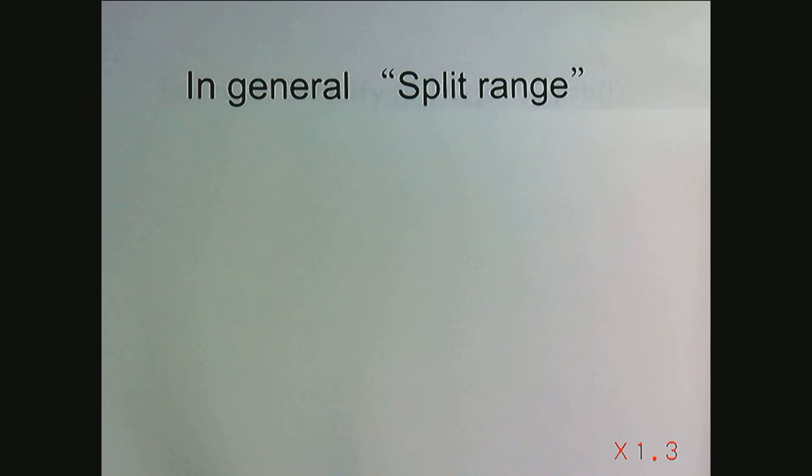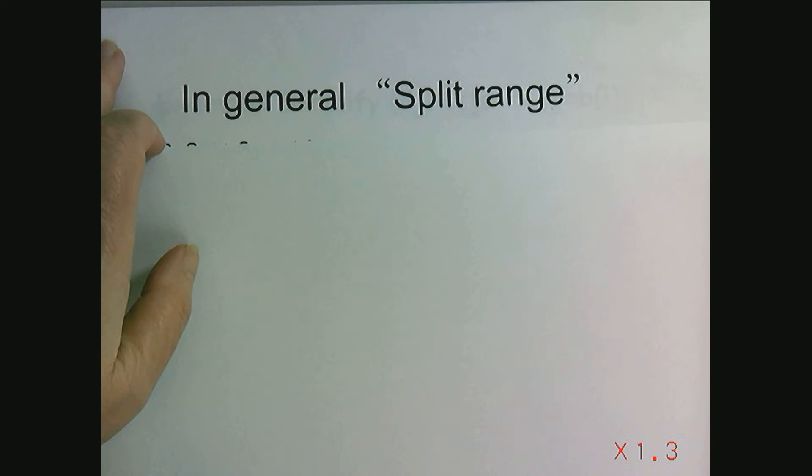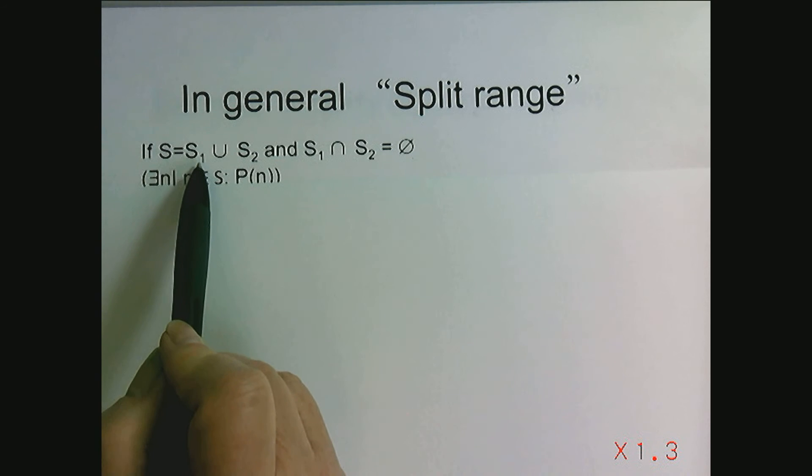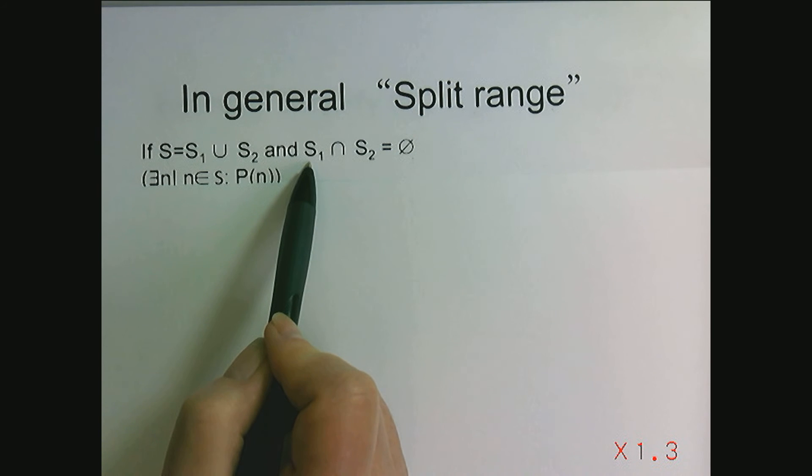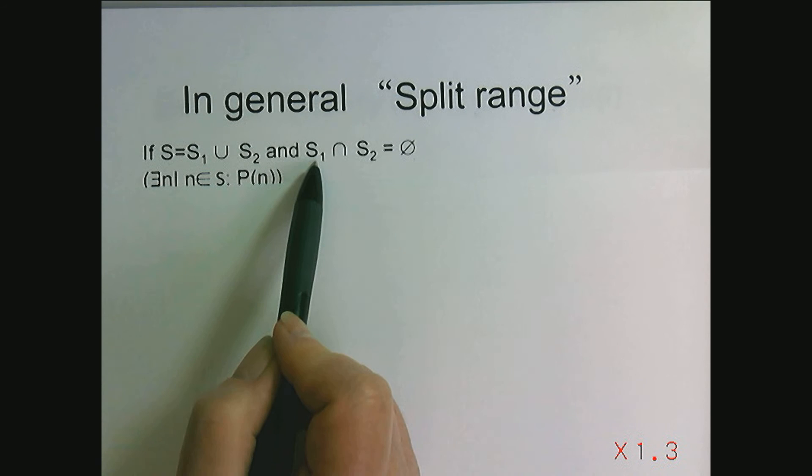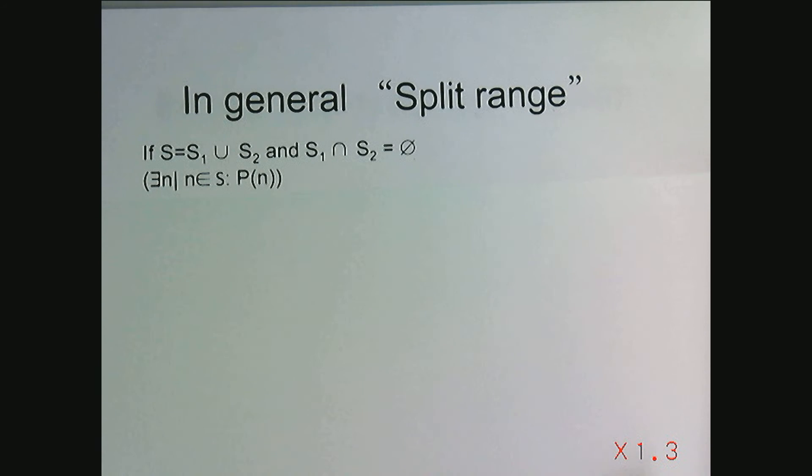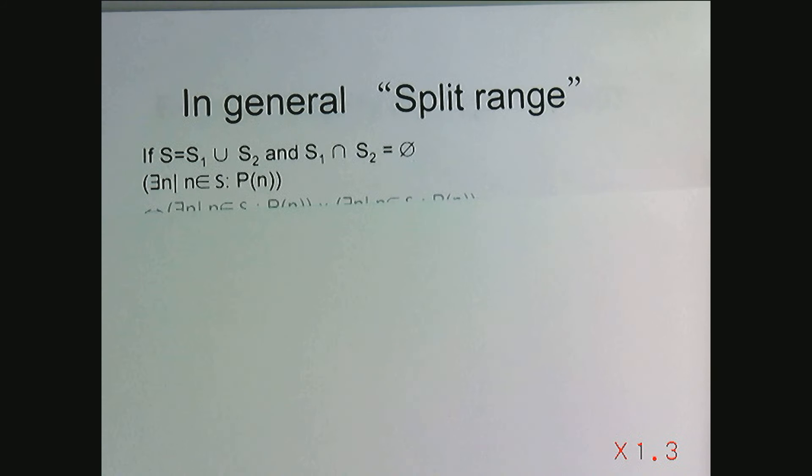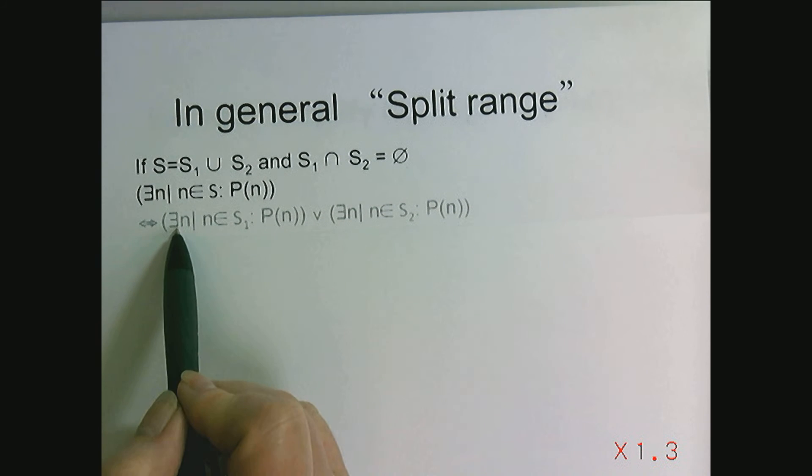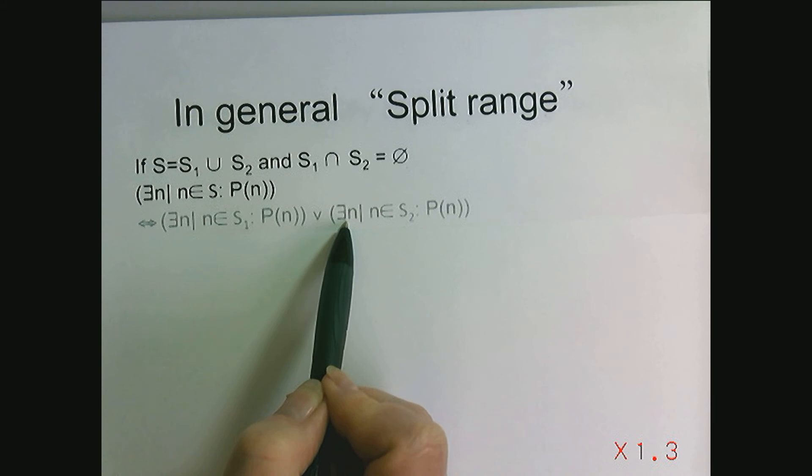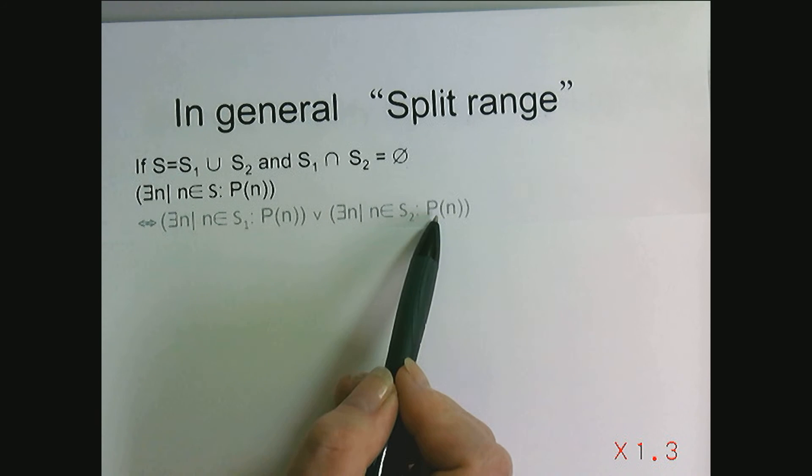In general, we can split ranges. If we have a range described by a set S where S can be decomposed into S equals S1 union S2 and the intersection of S1 and S2 is empty. In other words, S1 and S2 make up the whole range and there is no overlap between S1 and S2. Then if I want to look at there exists an N in the range of S such that P of N holds, then I could break it down into there exists an N where N is an element of S1 and P of N holds, or there exists an N such that N is an element of S2 and P of N holds.